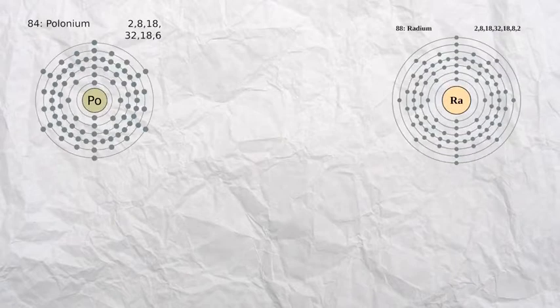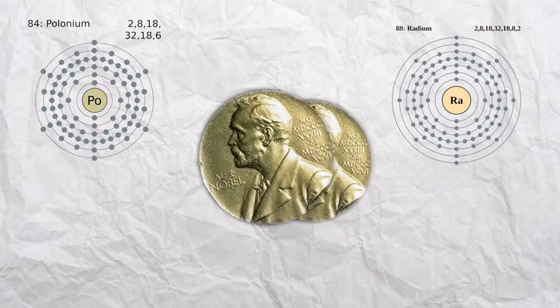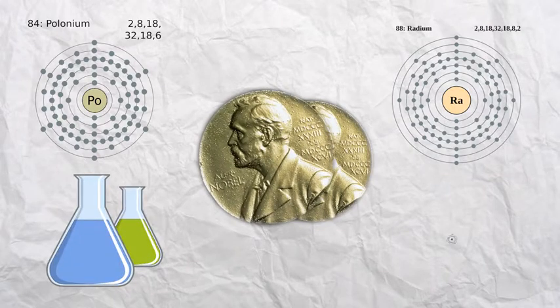Marie Curie was a very important person in the development of modern science. She discovered elements, became the first woman to win the Nobel Prize, and remains the only woman to receive two Nobel Prizes for her work in both chemistry and physics.